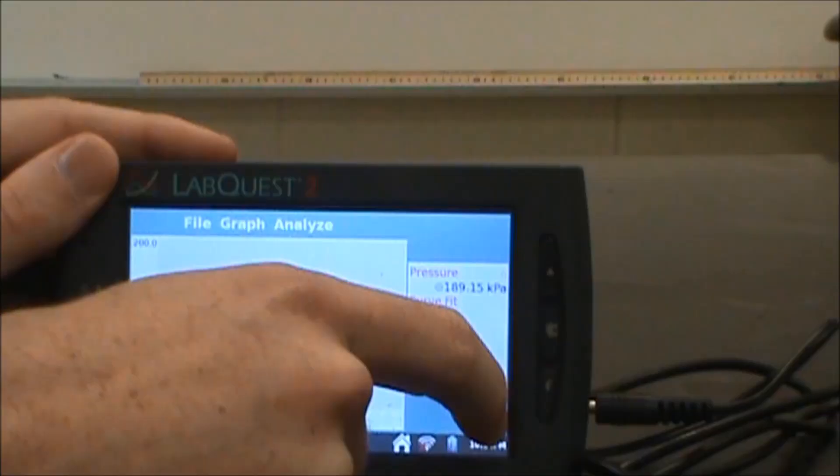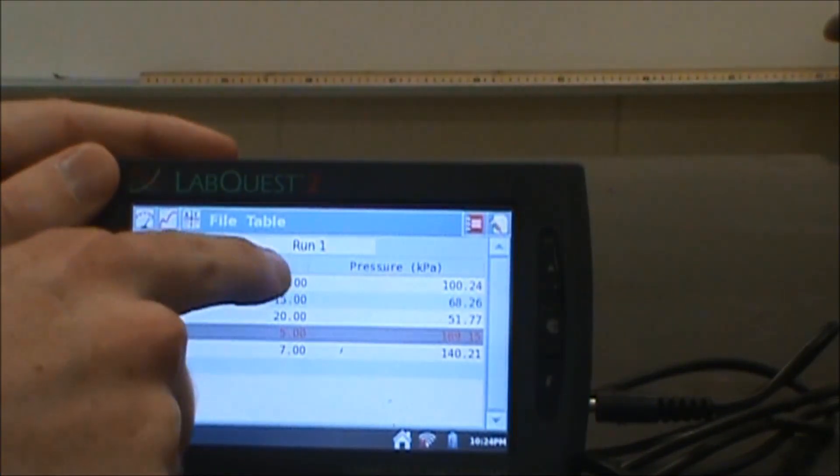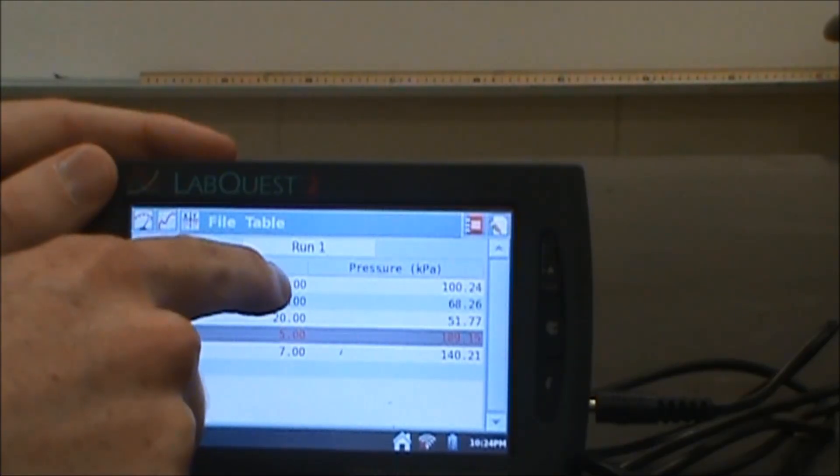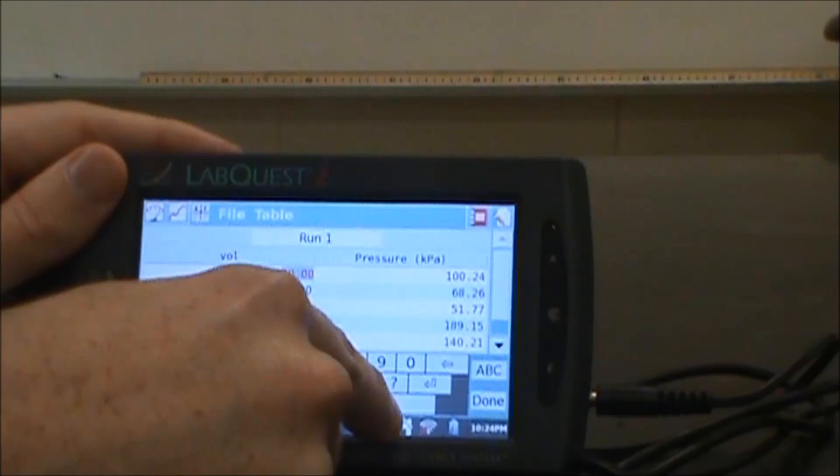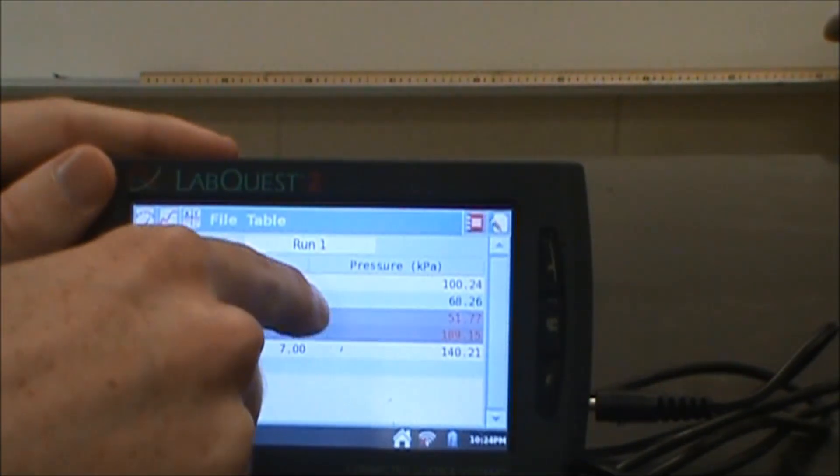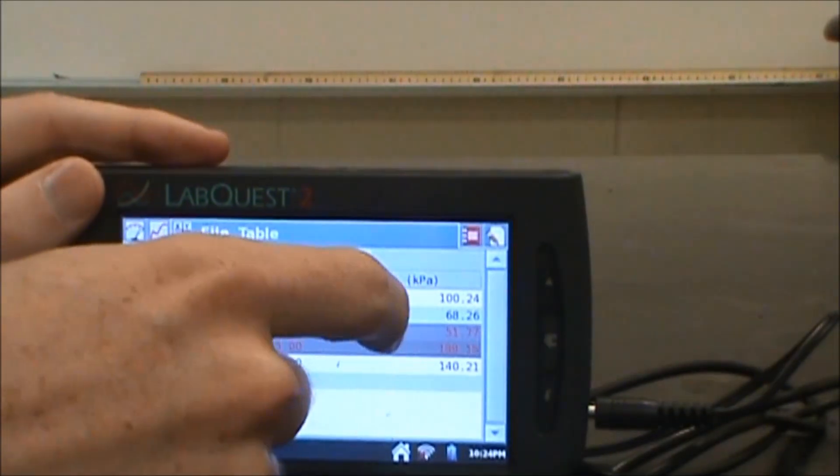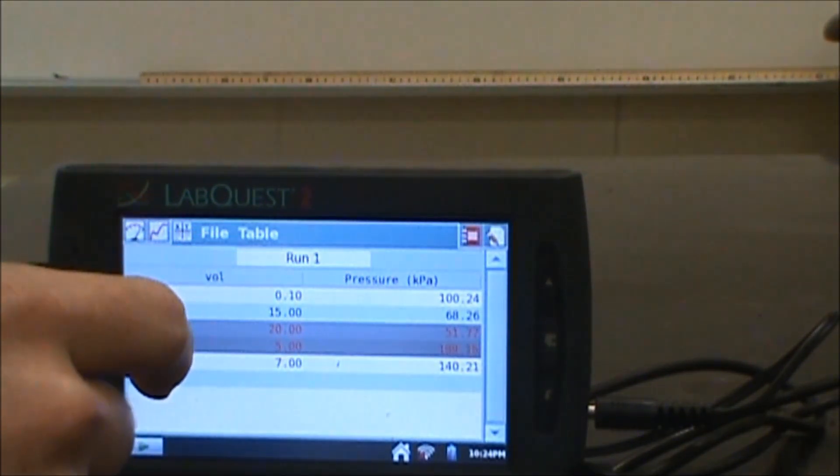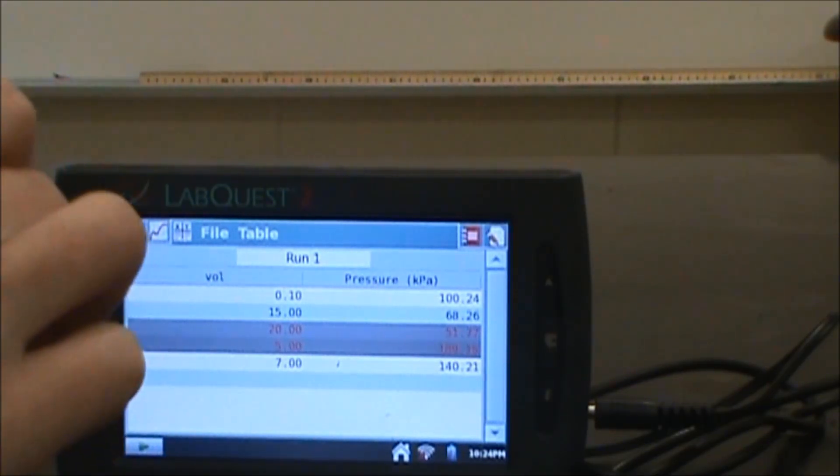Now, if you want to then go through and figure out what one divided by the volume would be, you can go through and change each of these from 10 to one divided by 10, which is 0.1. I can click on that. I can do that for each of these, plug those in, and then I can re-graph that and get a different function as well, if you want to do one divided by volume versus pressure.